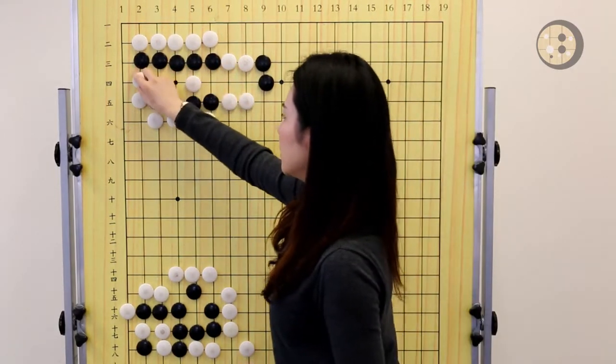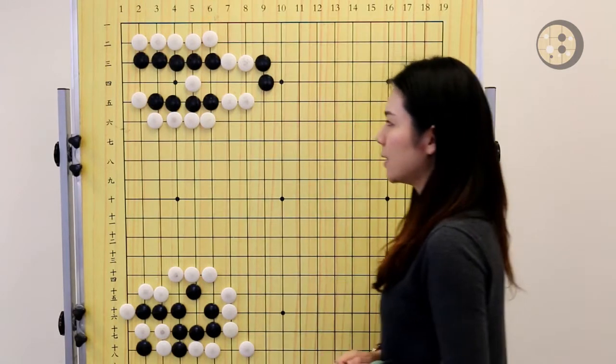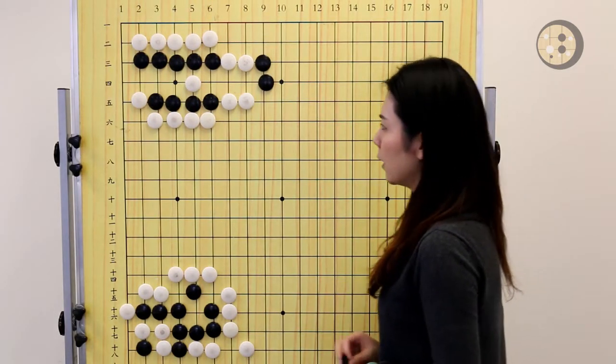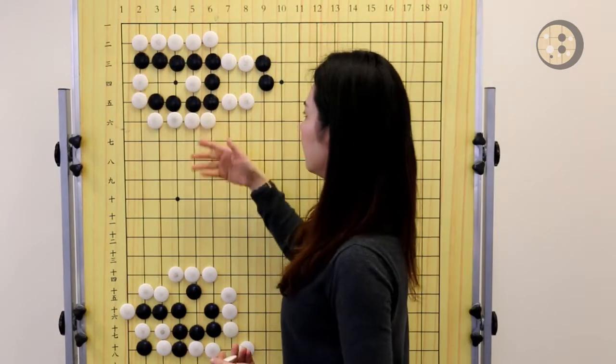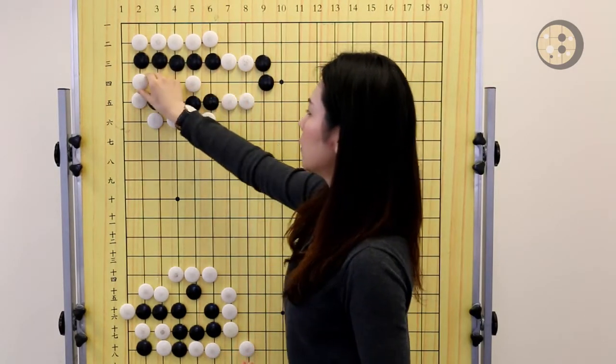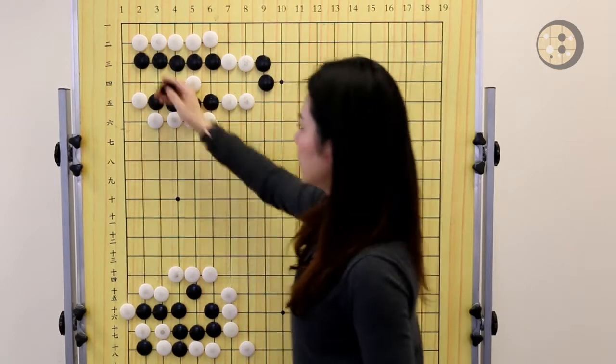So now the question is, how can you make a Sente eye first? So is this a Sente? No, that's not. Because after Atari, you still have one eye. So where's the Sente? We're just here.